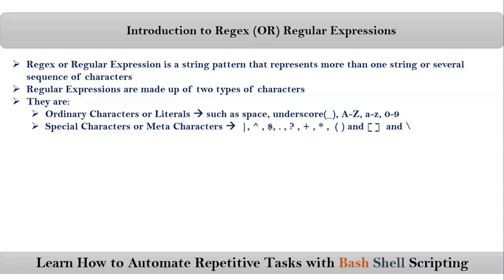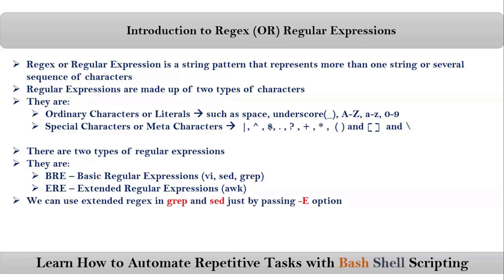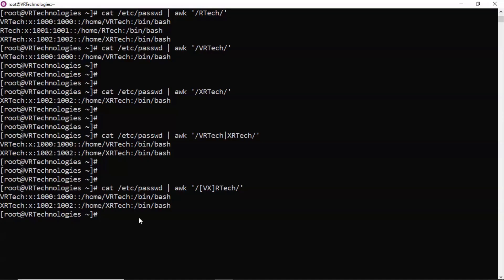Finally, we have to create regex or regular expressions using these two character types. While creating regular expressions, there are two types: first is basic regular expressions, or simply BRE, and second is extended regular expressions, or ERE. By default, sed, grep, and vi follow basic regular expressions format. Arc follows extended regular expressions format. If you want to use extended regex in grep and sed, you can do so by passing the hyphen-E option.